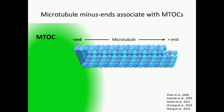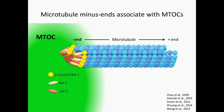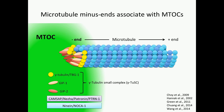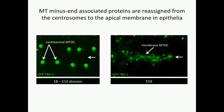Microtubules themselves are intrinsically polar polymers. They have a highly dynamic plus-end and a relatively stable minus-end, and that stability is provided by their localization to the MTOC, which is generally enriched for proteins that associate with the minus-end and are required for stabilizing, nucleating, and anchoring those microtubules. These include things like gamma-tubulin, the dominant microtubule nucleator, and its interacting proteins GIP1 and GIP2, which partner to form the gamma-tubulin small complex, or gamma-TuSC. Additional proteins also localize to these minus-ends and MTOCs, such as Patronin and NOCA1.